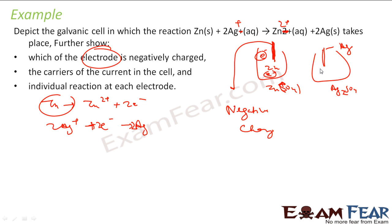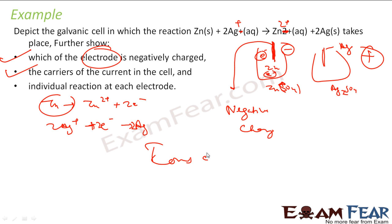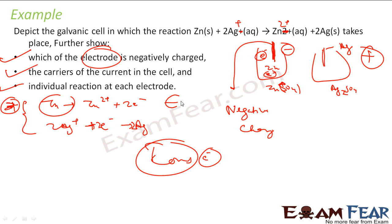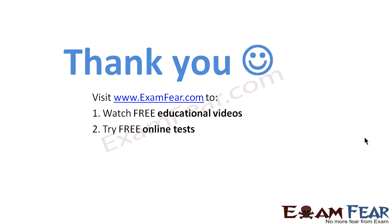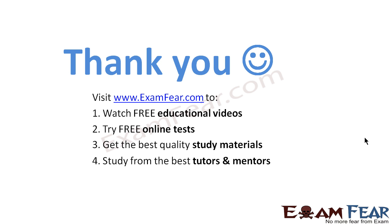The silver electrode is positively charged. The carriers of current in the external circuit are electrons, while inside the cell, ions carry the current. The individual reactions: oxidation occurs at the negative zinc electrode, and reduction occurs at the positive silver electrode. Thank you — visit examfear.com to watch free educational videos, try free online tests, get quality study materials, and study from the best tutors.